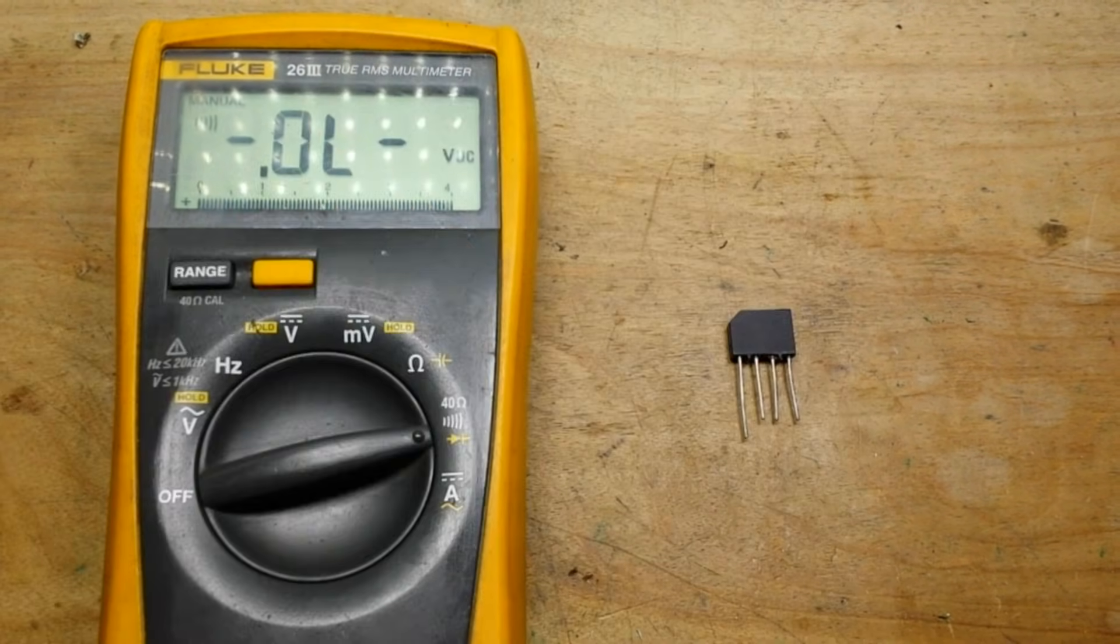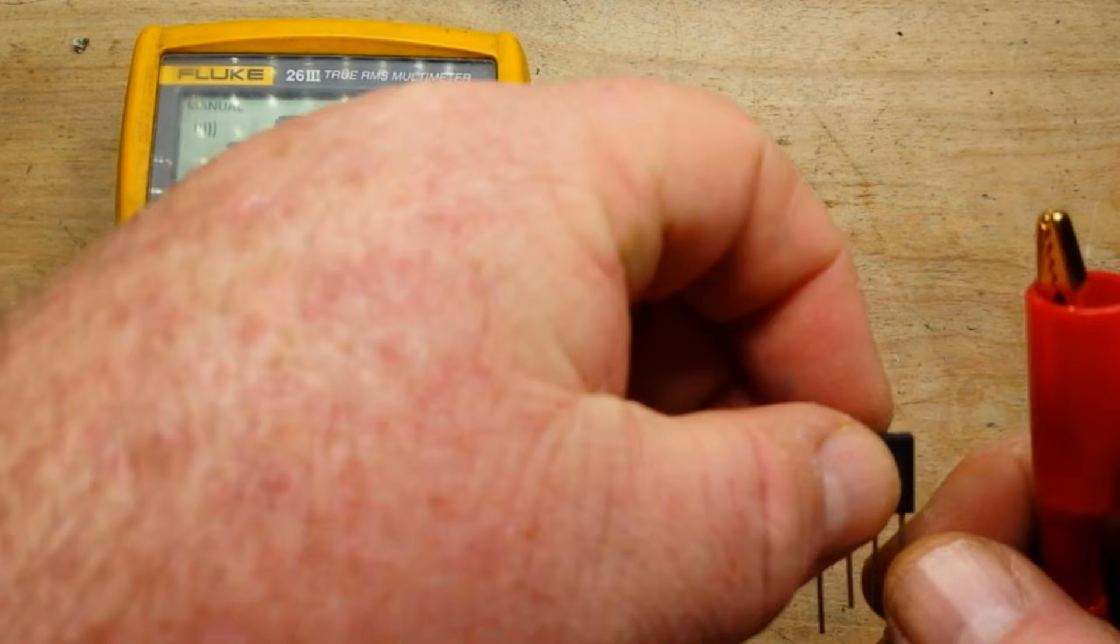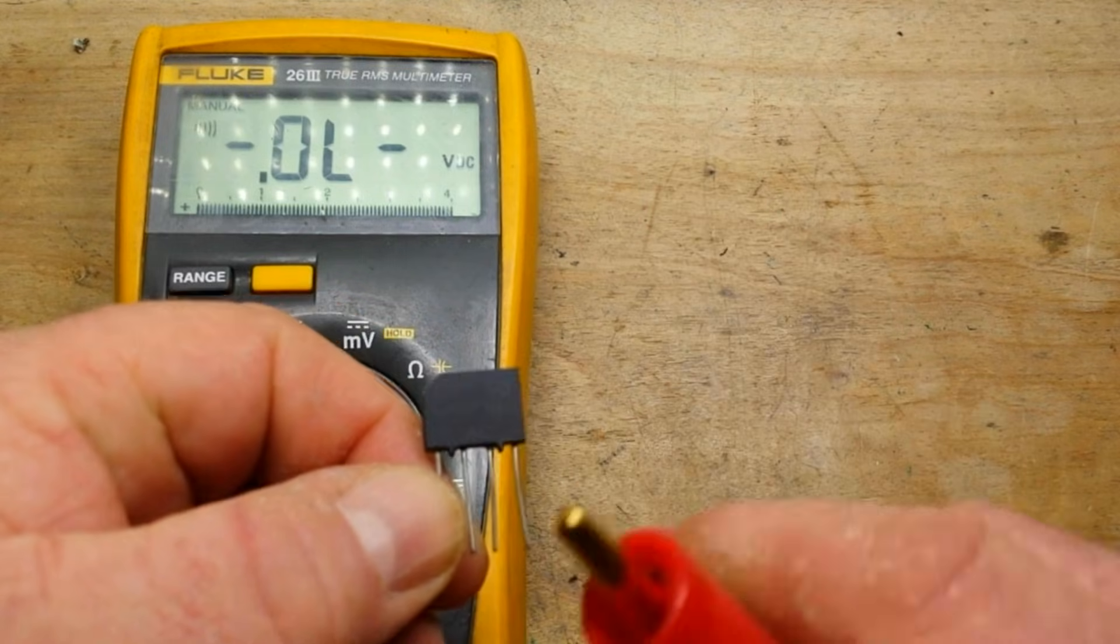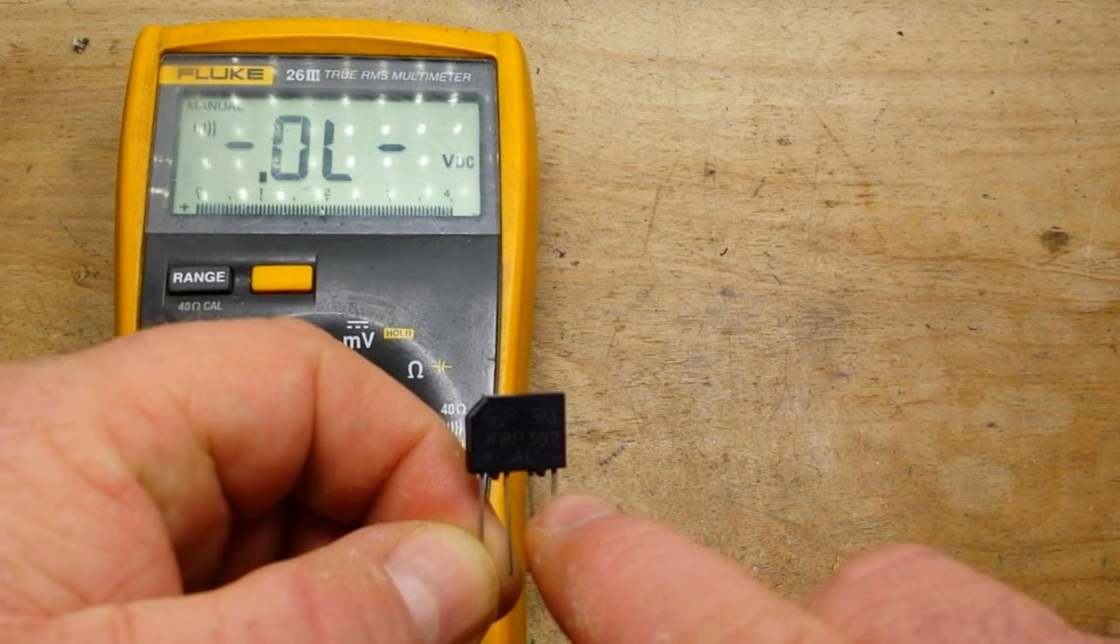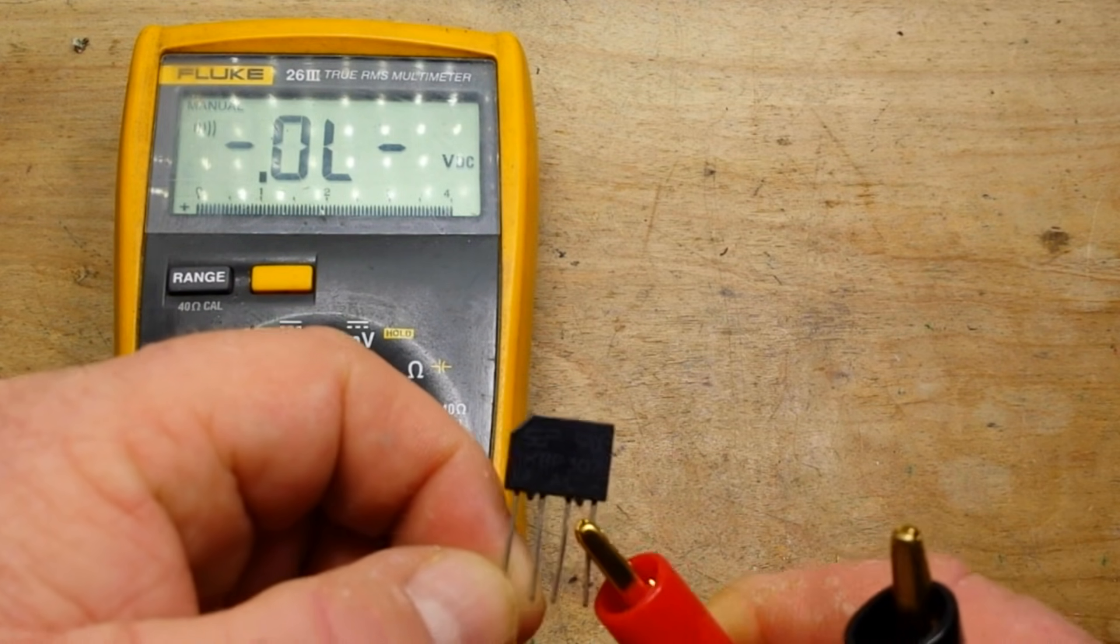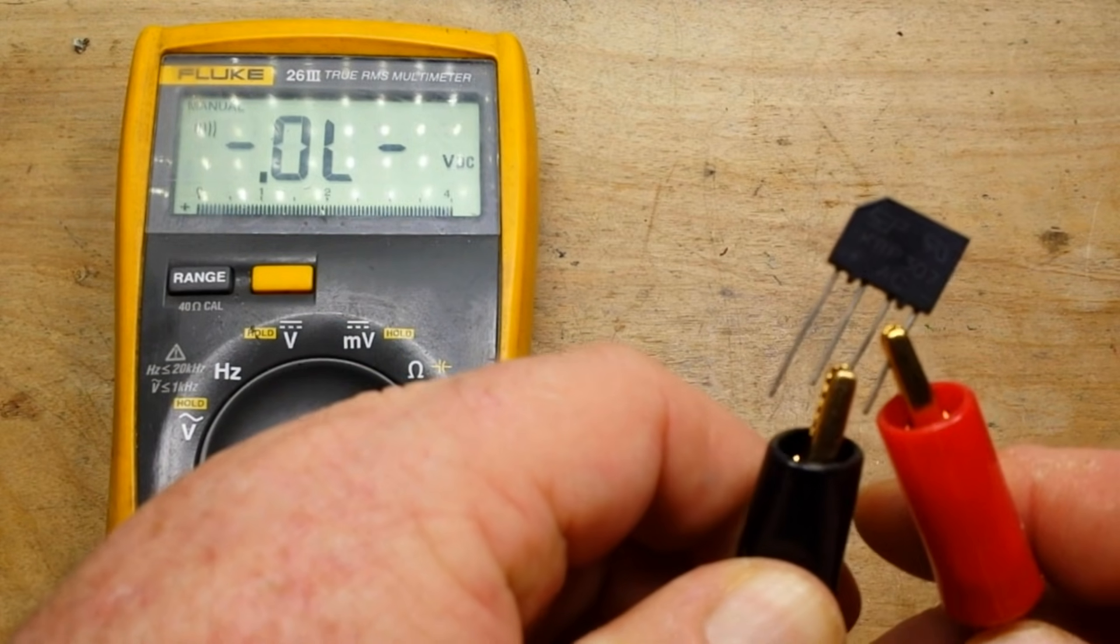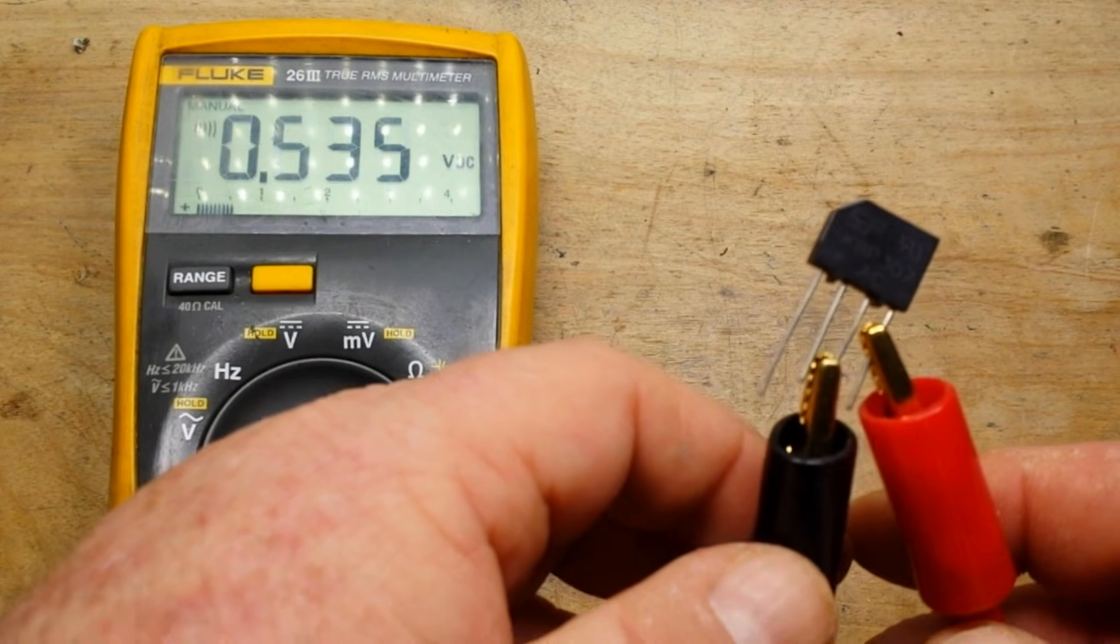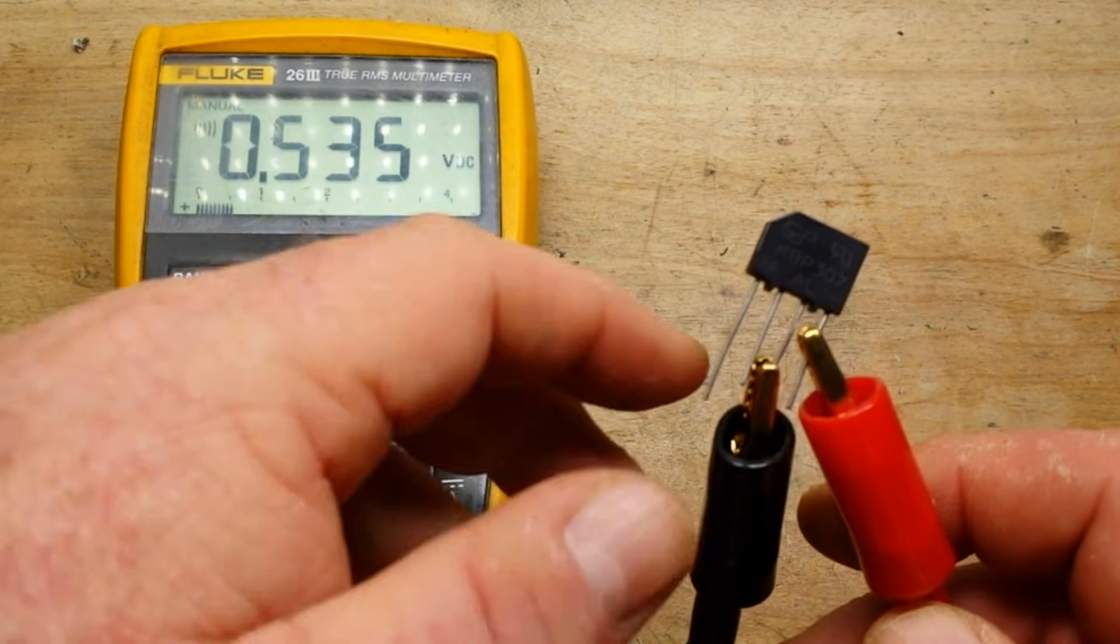So to test, remember this is starting from the left: positive, AC, AC, negative. We're going to put our positive lead on the negative and then we're going to put our negative lead on the AC, and you see we have a standard diode drop.